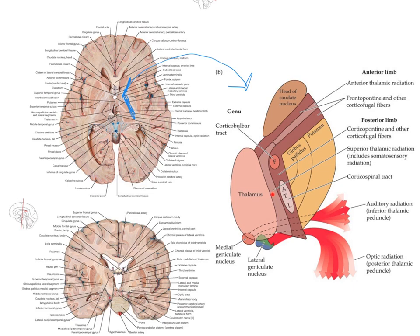Information from the somatosensory system runs through the posterior limb of the internal capsule up to the primary sensory cortex. We also have an anterior thalamic radiation which contains projections going from the thalamus to the frontal lobes and other parts of the brain not directly related to sensation.